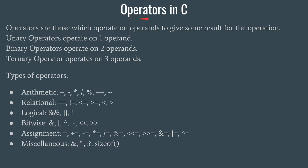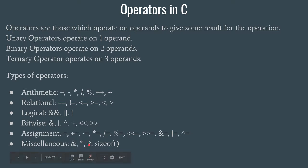Operators are of three types: unary operators, binary operators, and ternary operators. Unary operators can operate on only one operand. Binary operators operate on two operands. Ternary operators operate on three operands. The example of a unary operator is negation. Binary operators include plus, minus, multiplication, division, modulo division, and so on. The ternary operator is used in condition checking and we will look at it when we discuss decision statements in C.